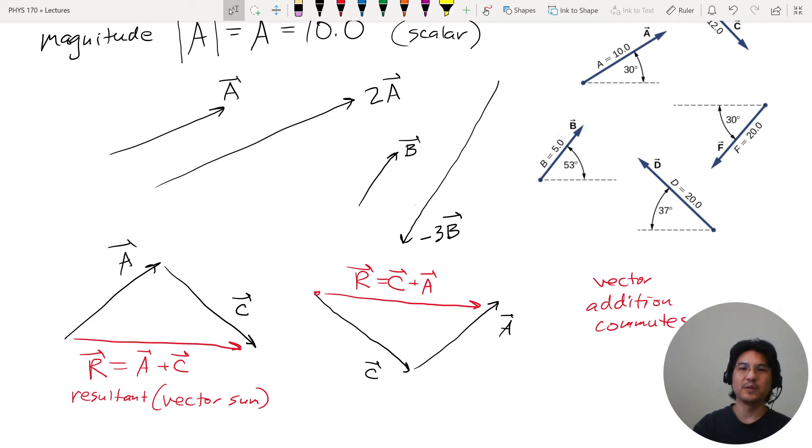And to measure, you would literally take a ruler and measure the length of this, and then take a protractor and measure the angle of this, and that's how you would quantify the resultant. So this is the graphical method to add. Next time we'll do a different method.